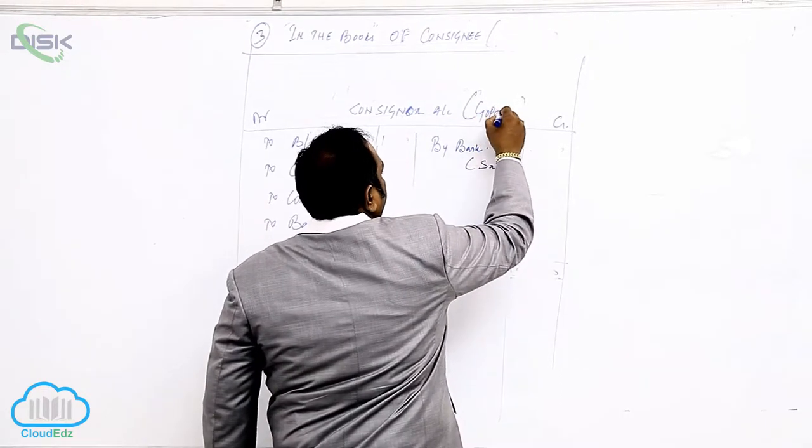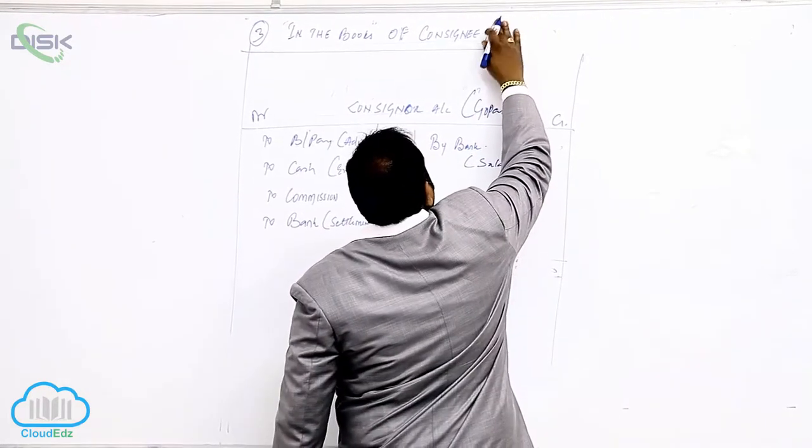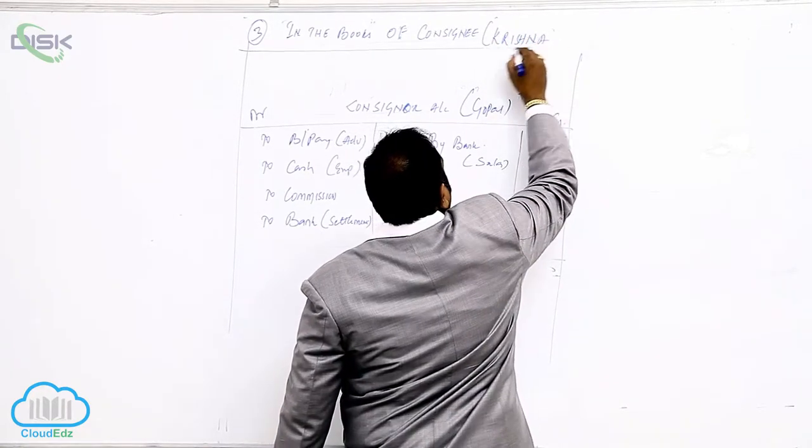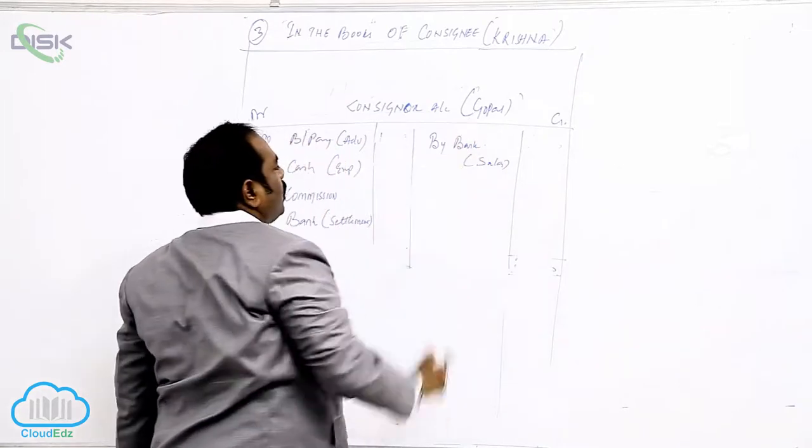So Krishna is consignee. In the books of consignee, that is Krishna, in Krishna's books we are opening Gopal's account.